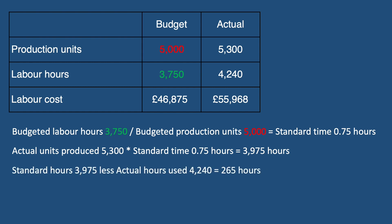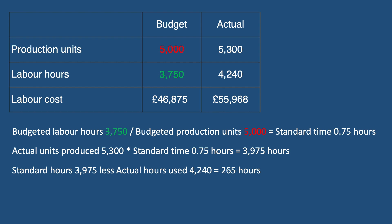The difference between the expected 3,975 hours and the actual 4,240 hours is 265 hours — meaning the business used 265 more hours than expected for this number of units. To convert this to a monetary value, we multiply the 265 hours by the standard cost per hour of £12.50, giving us a labour efficiency variance of £3,312.50. Because more labour hours were used than expected, this variance is adverse.